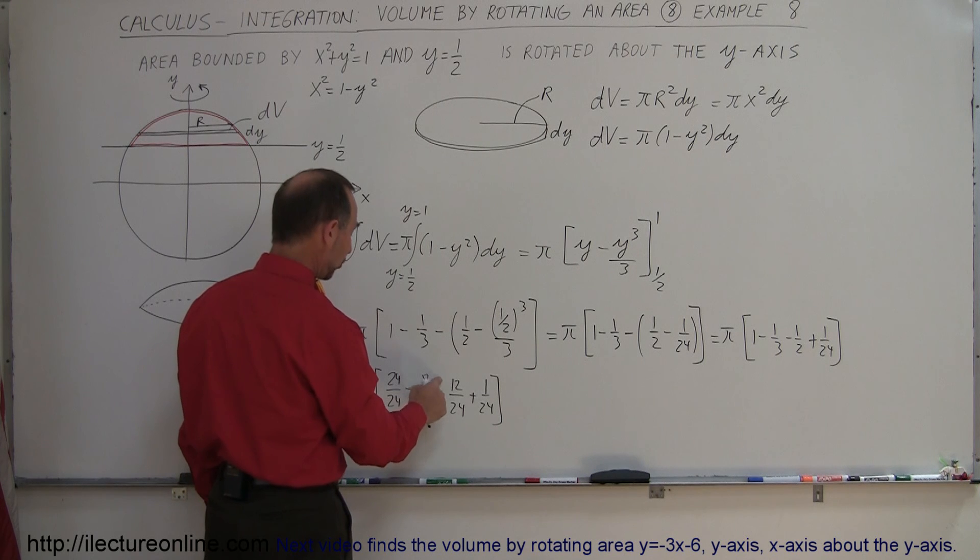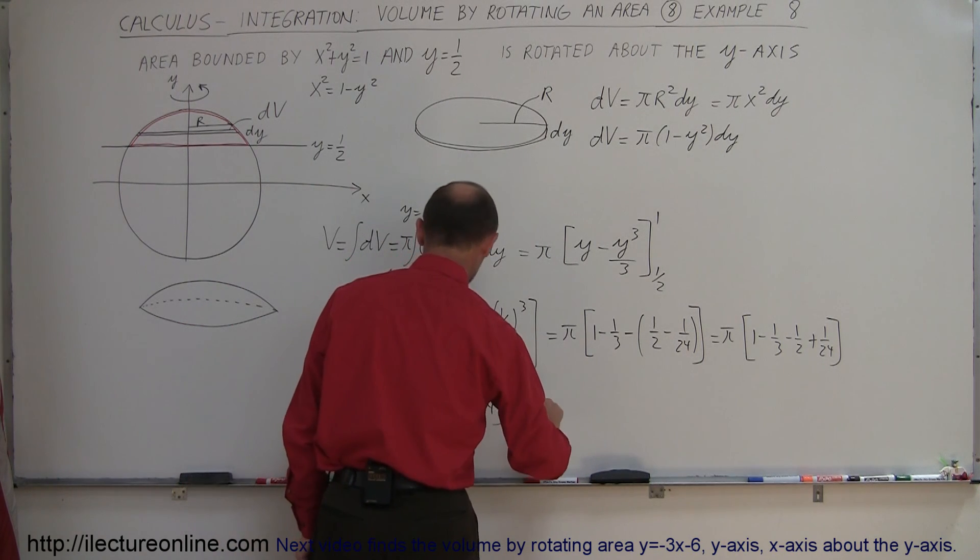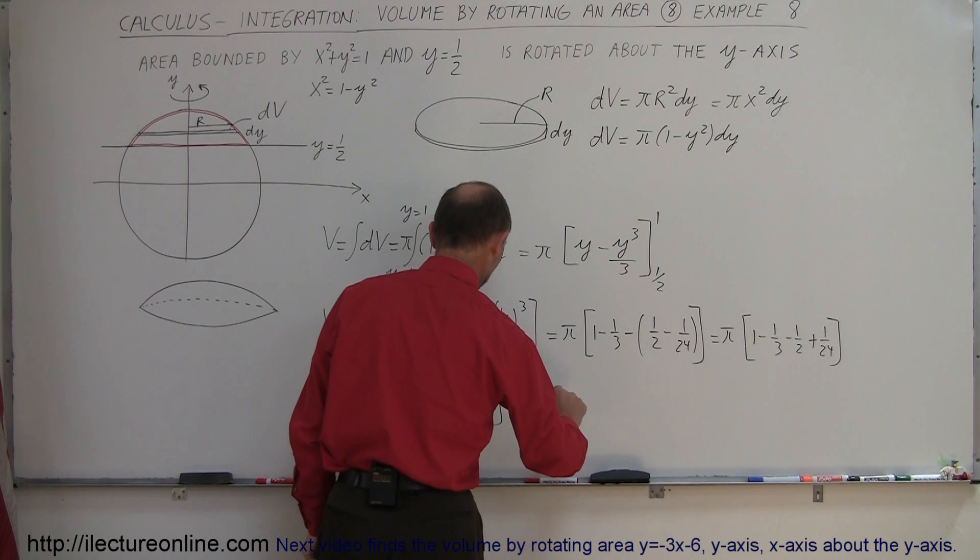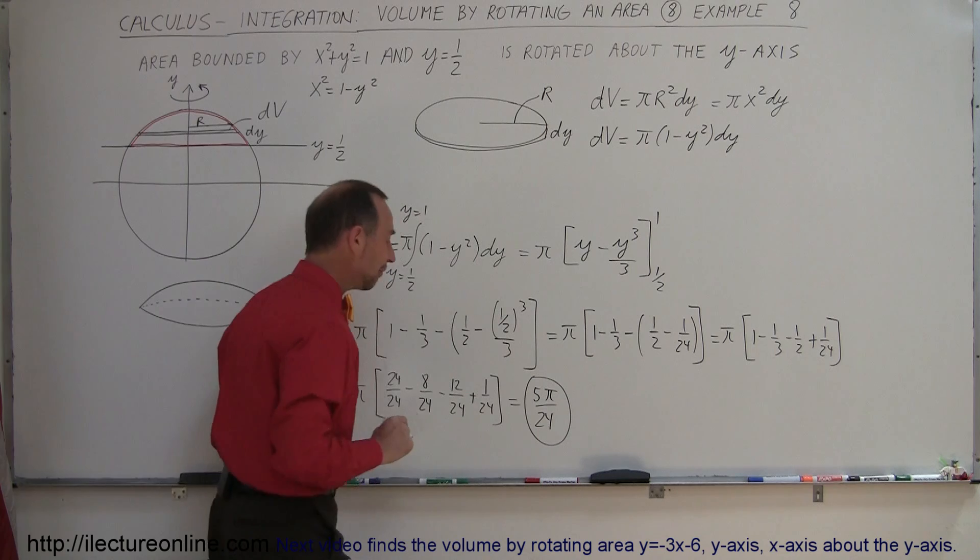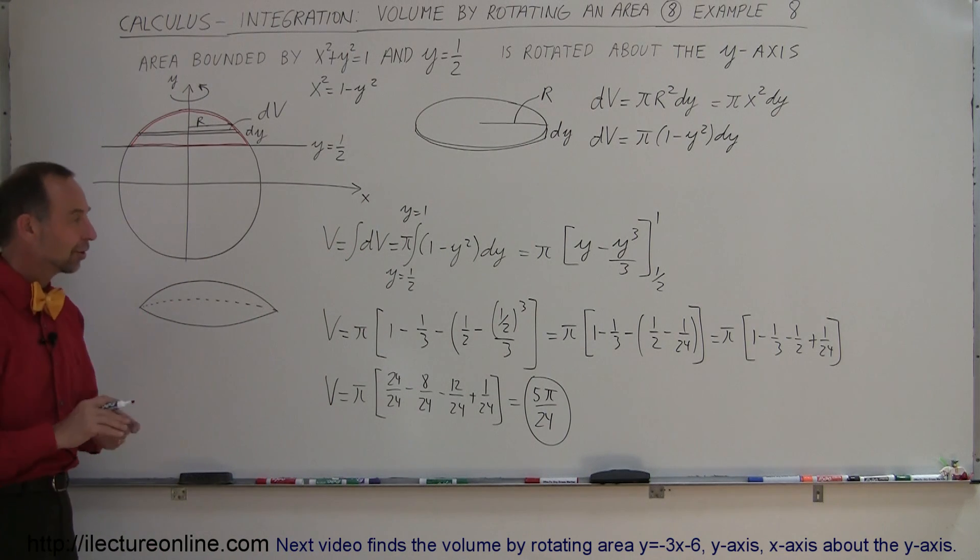So minus 8 minus 12, that's minus 20. Subtract from 24 is 4, plus 1 is 5. So finally, V is equal to 5 pi over 24, and that would be the final volume of this section of that sphere. And that's how we do that.